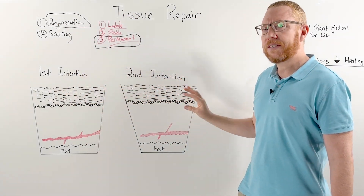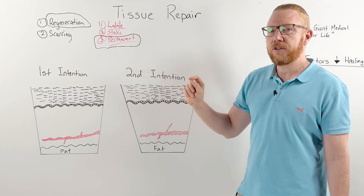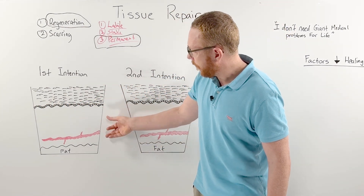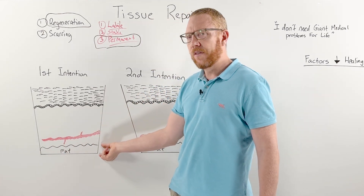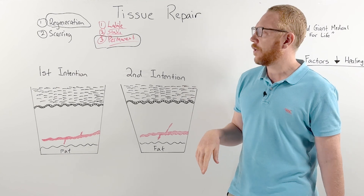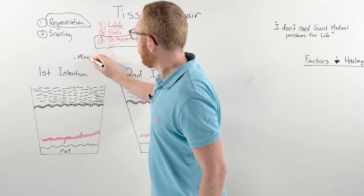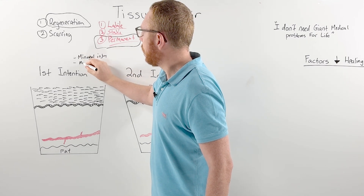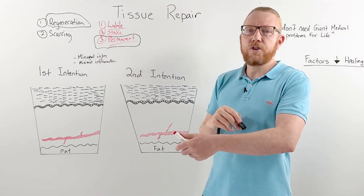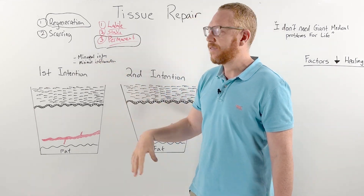Now we'll focus on skin. The two pictures illustrate the difference between first intention and second intention wound healing. We have the top layer — the epithelium with the basal cells at the bottom — then the dermis illustrated by a blood vessel, and below that the hypodermis, which is fat. First intention wound healing involves minimal injury, minimal inflammation, and injuries like lacerations, surgical incisions, and puncture wounds — not a huge amount of tissue disruption or tissue loss.